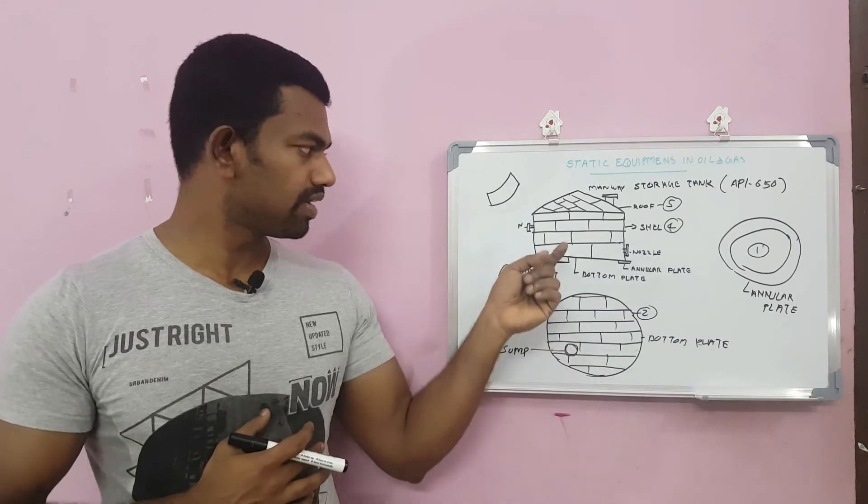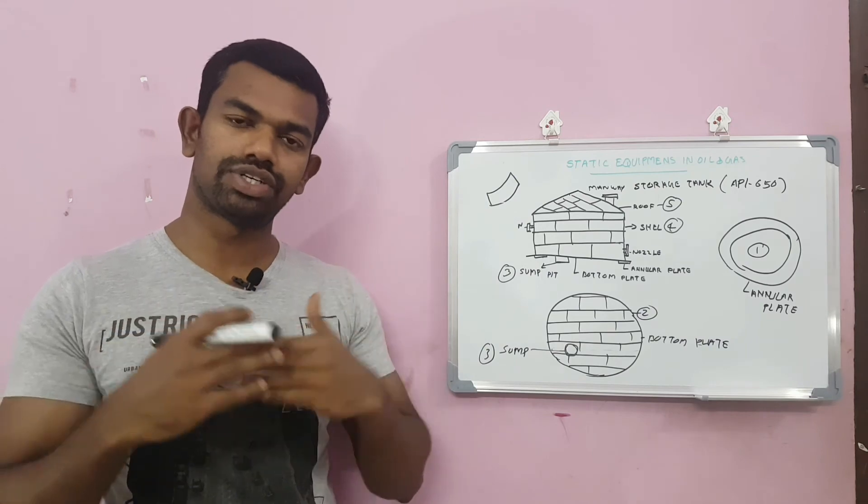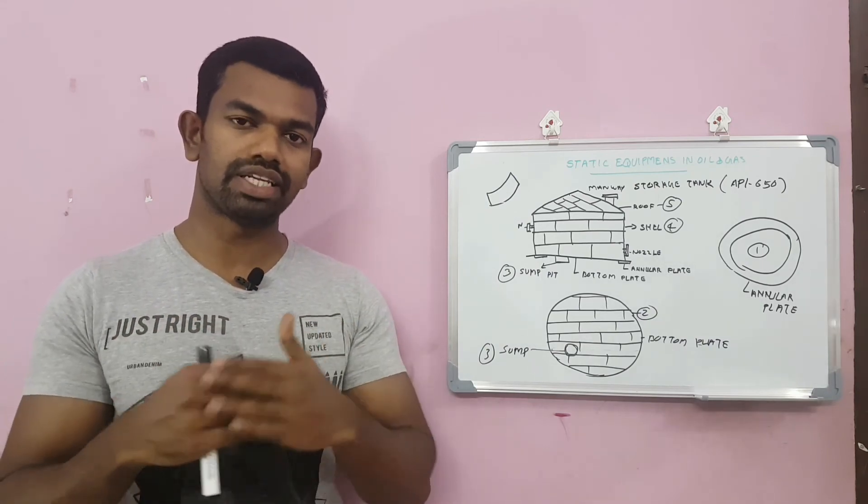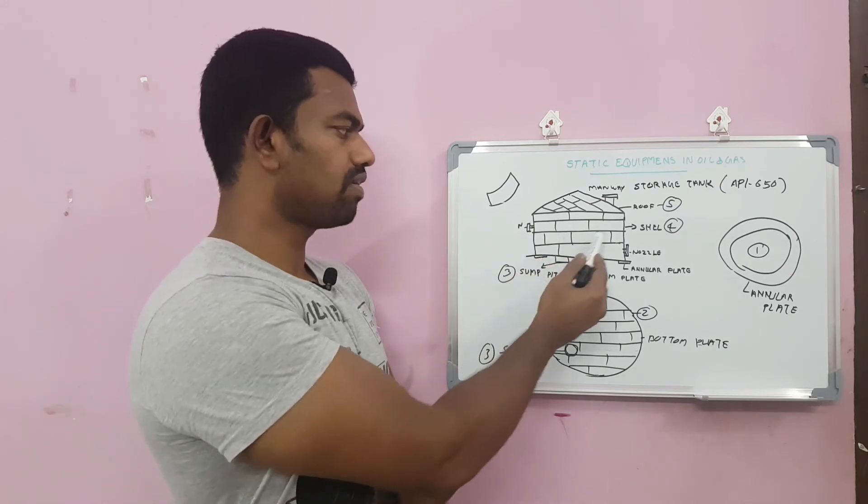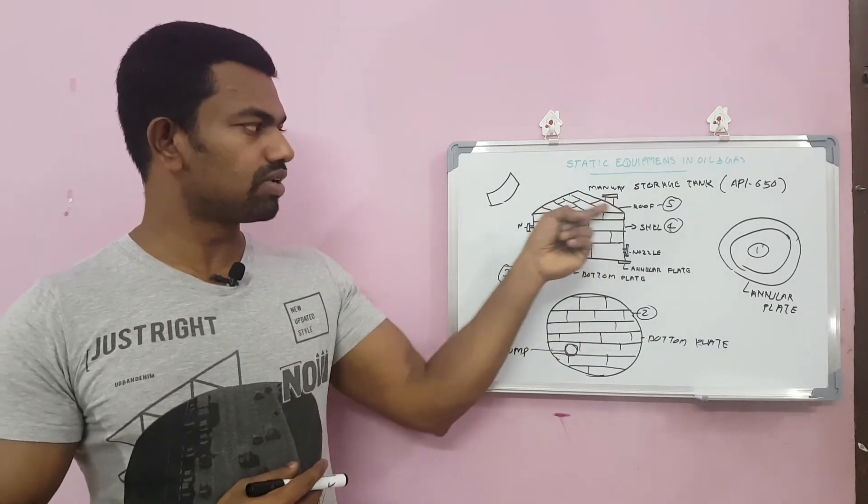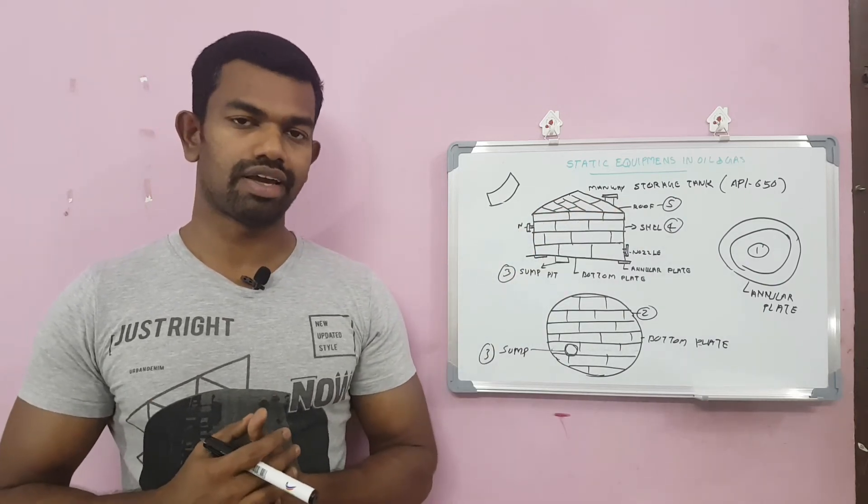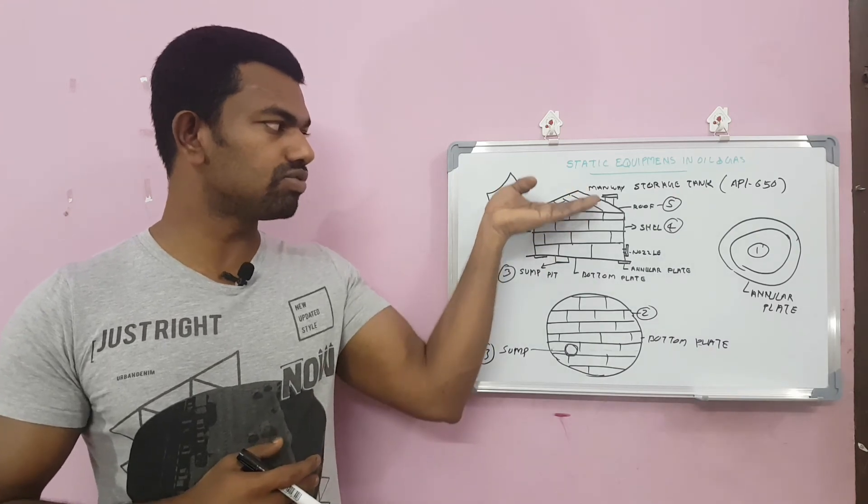For the shell, we will make the curve shape. Plate will be bent by the bending machine and will be installed in the field one by one and we will do the welding. The fifth is the roof. Different kinds of roof designs - fixed roof and floating roof. The floating roof will be moving.